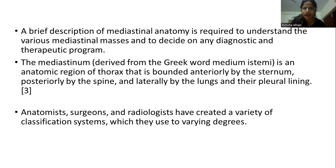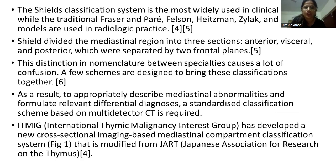A brief description of mediastinal anatomy is required to understand the various mediastinal masses and to decide on any diagnostic and therapeutic program. The mediastinum is an anatomic region of the thorax that is bounded anteriorly by the sternum, posteriorly by the spine, and laterally by the lungs and their pleural lining. There are various classification systems used in clinical and radiological practice, and this distinction in nomenclature between specialties causes a lot of confusion.